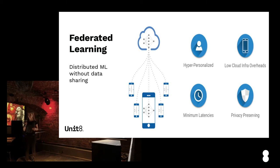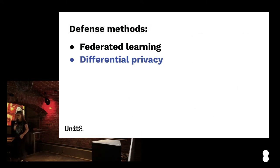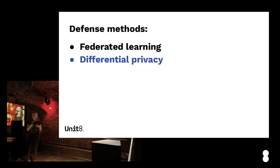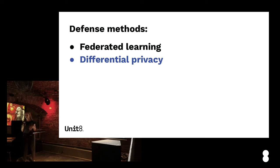Federated learning models are hyper-personalized for single users, involve low infrastructure overhead and minimum latency, and are privacy-preserving by design. This allows machine learning use in several interesting situations — for example, a group of hospitals may be interested in applying machine learning techniques to improve healthcare of their patients, but they don't have sufficient data to do so by themselves and may not be willing to reveal data for aggregation. This is a perfect scenario for federated learning.